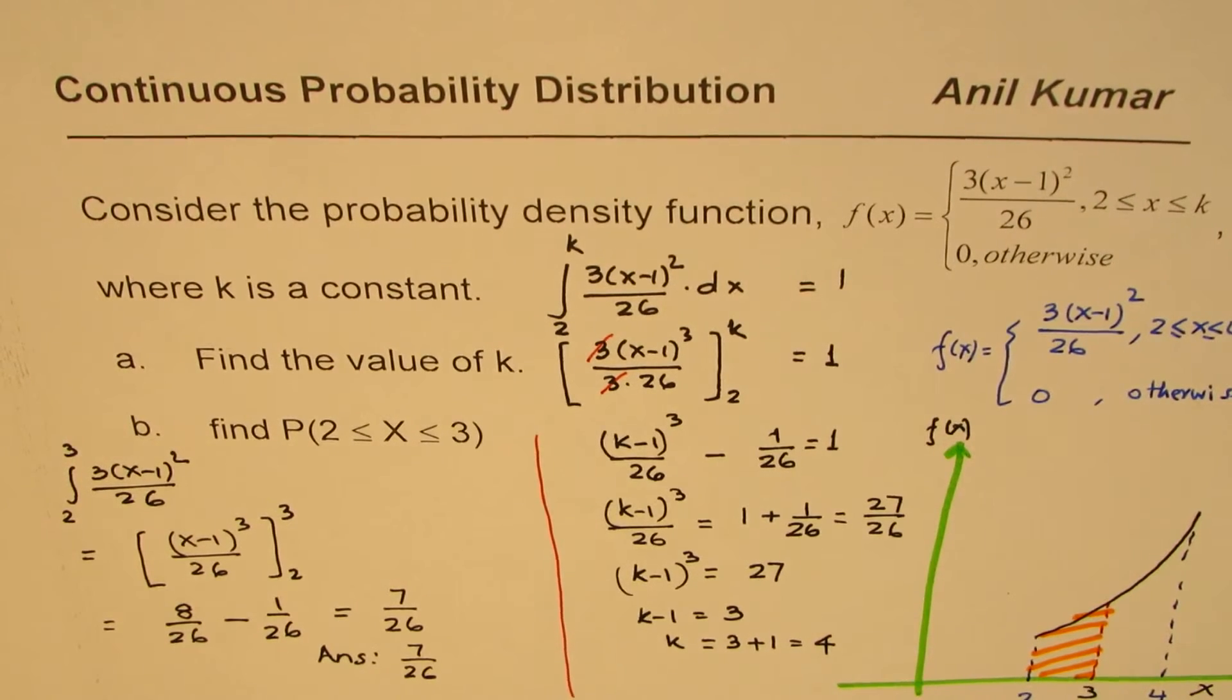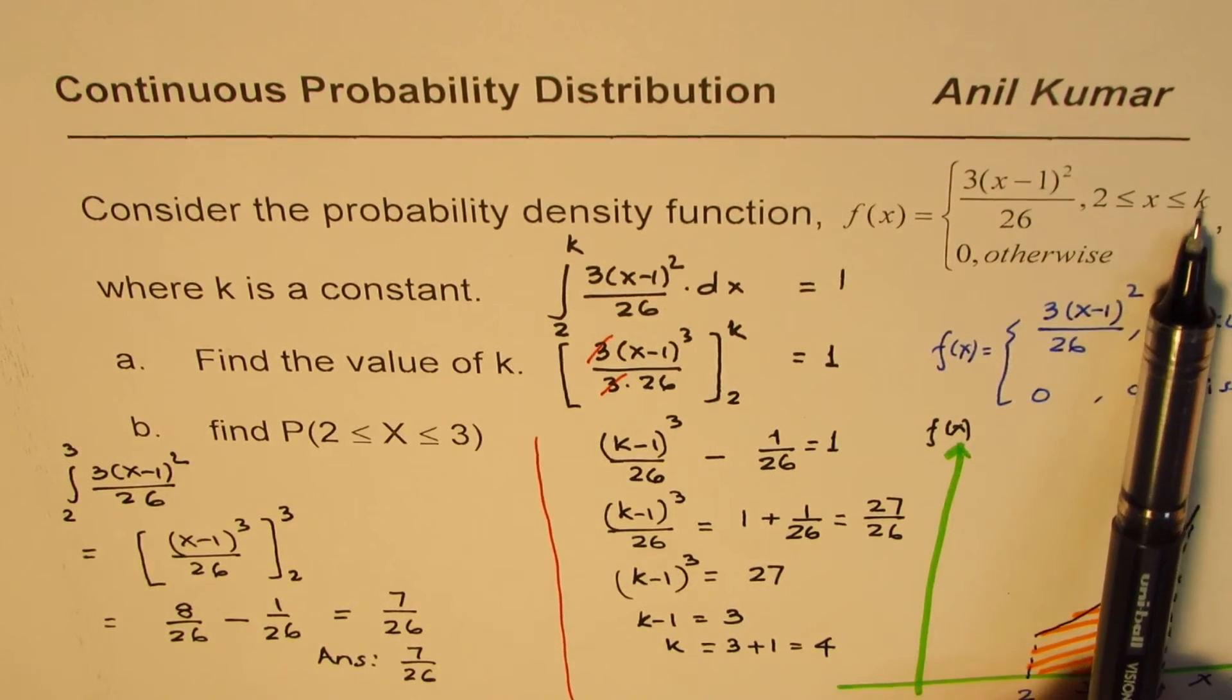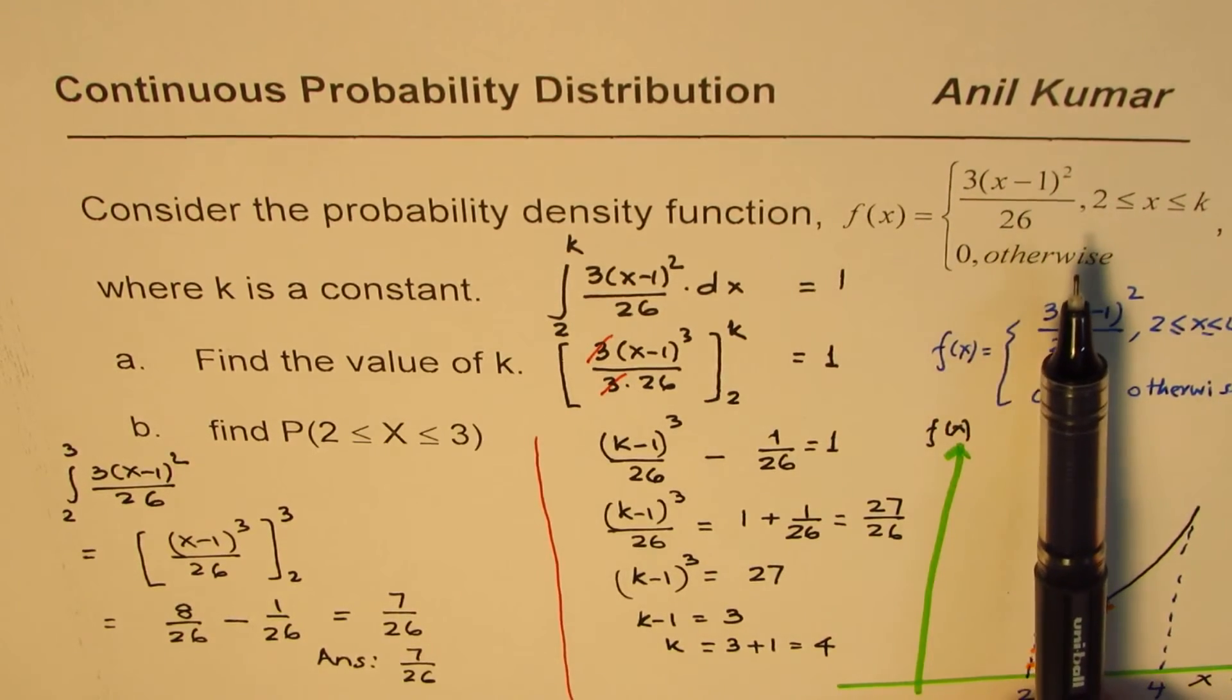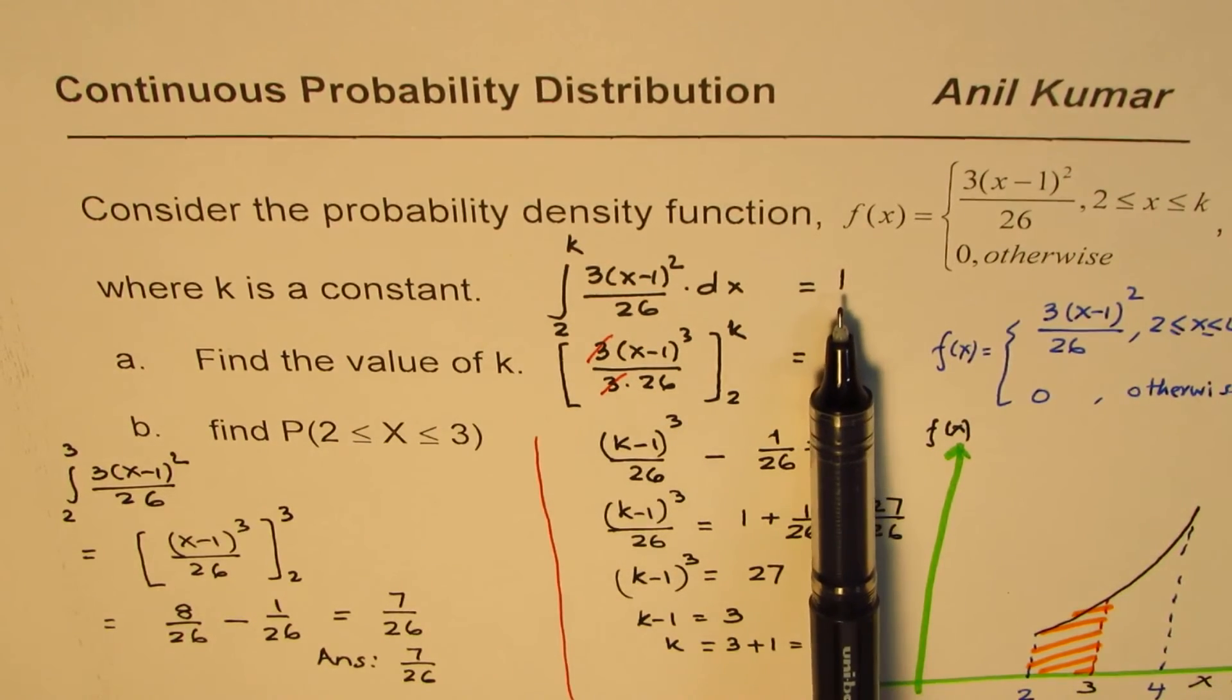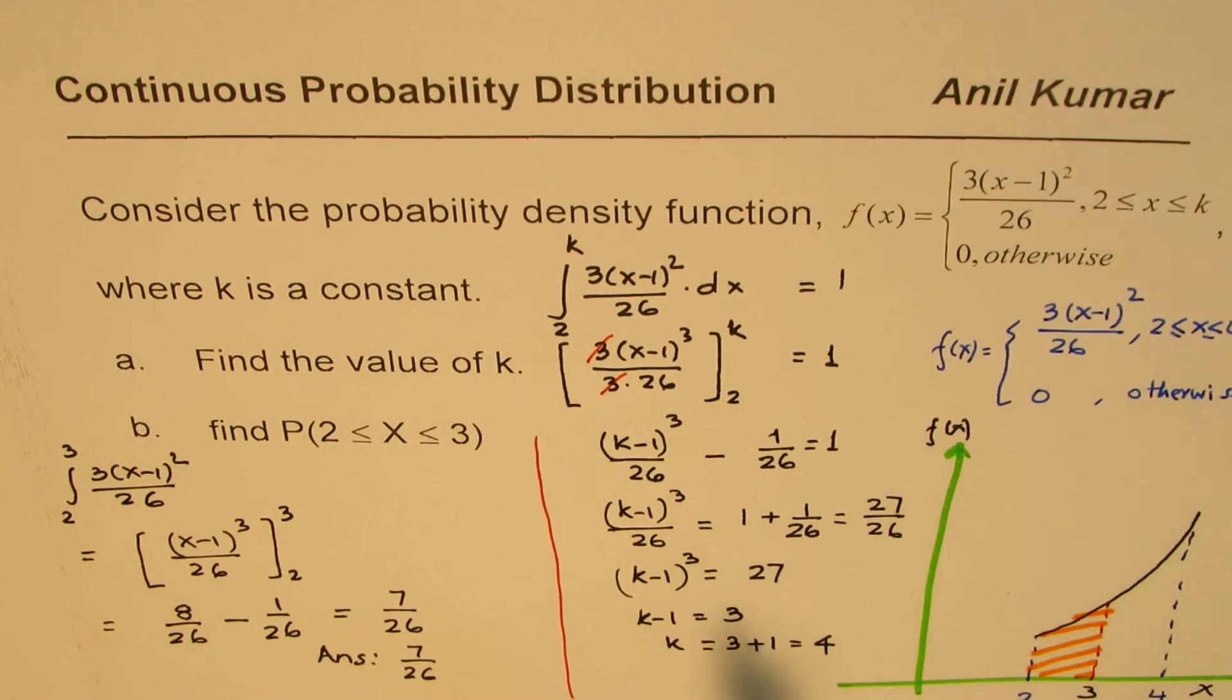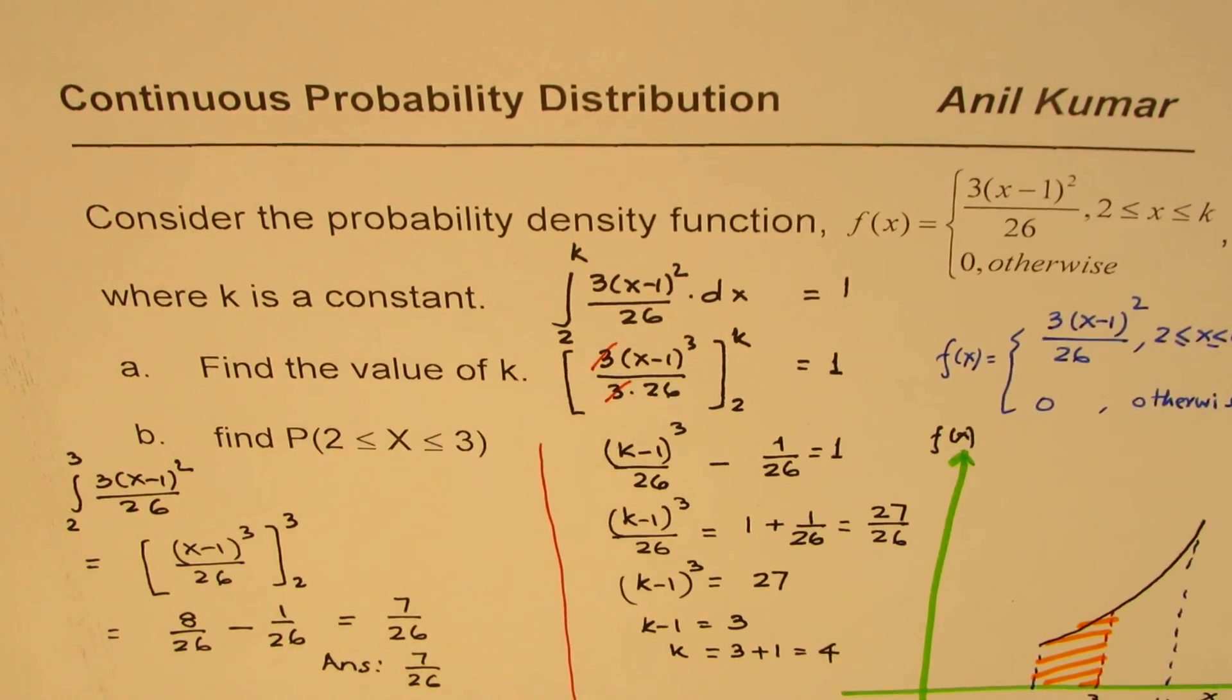Anil Kumar, I hope you understand the basic concept. So in most of the questions which are like this, sometimes we are not given this parameter, in this case the limit. Sometimes we don't have complete equation. So the idea here is that probability density function is always 1 over the given range. So from there we can find the unknown, once we get the equation, it's a matter of finding area under the curve for that particular portion to get the answer. I'm Anil Kumar, and I hope that helps. You can always share and subscribe my videos. Thank you, and all the best.